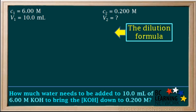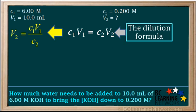We need to use the dilution formula, which is C1V1 equals C2V2. Our unknown is V2, so we need to rearrange the equation so it will solve for V2. And we get V2 equals C1V1 over C2.